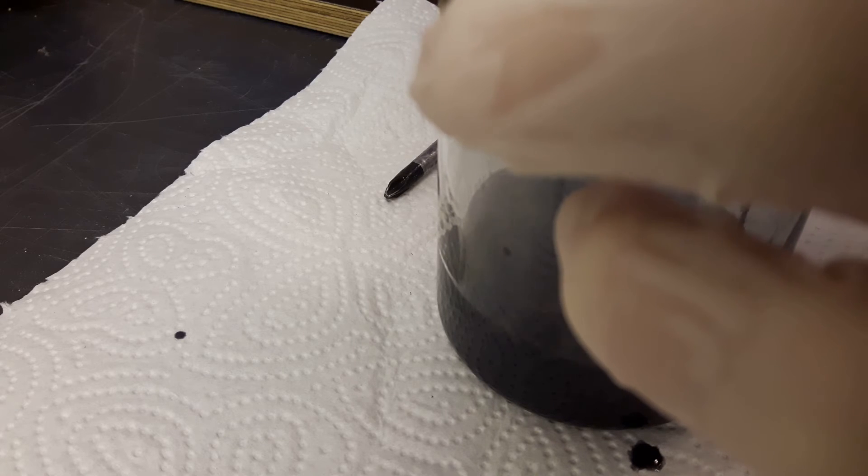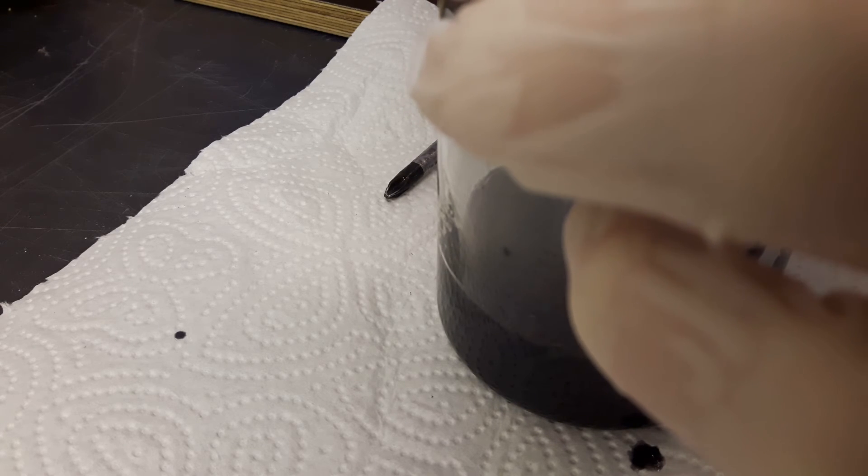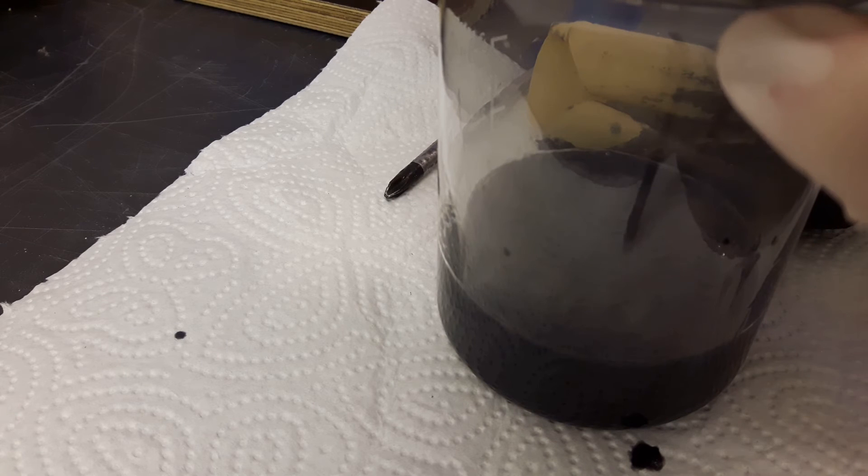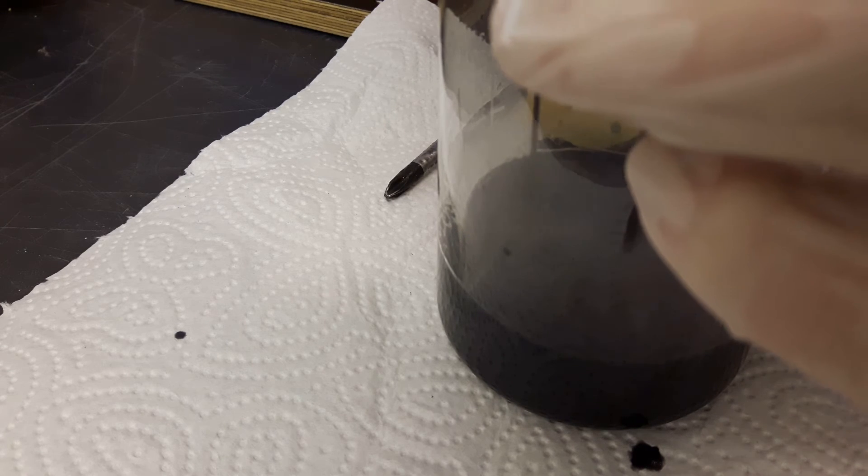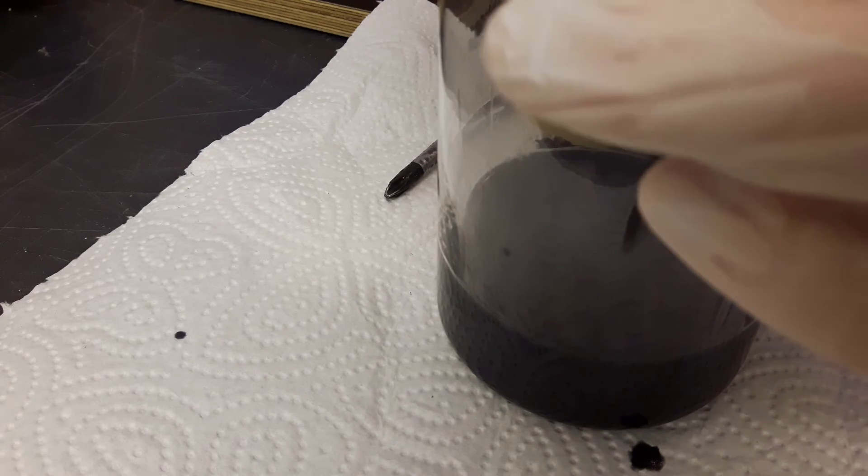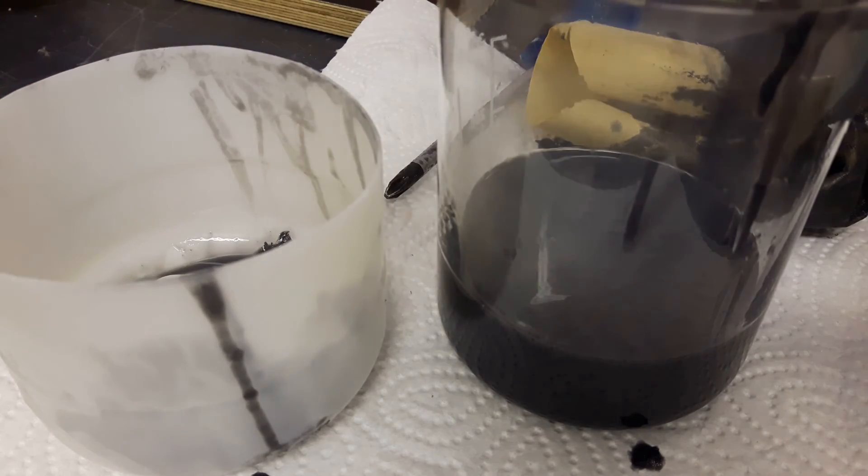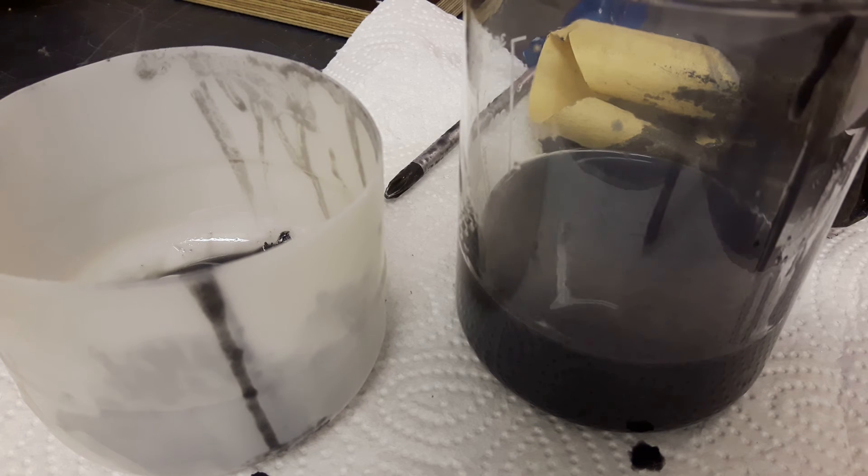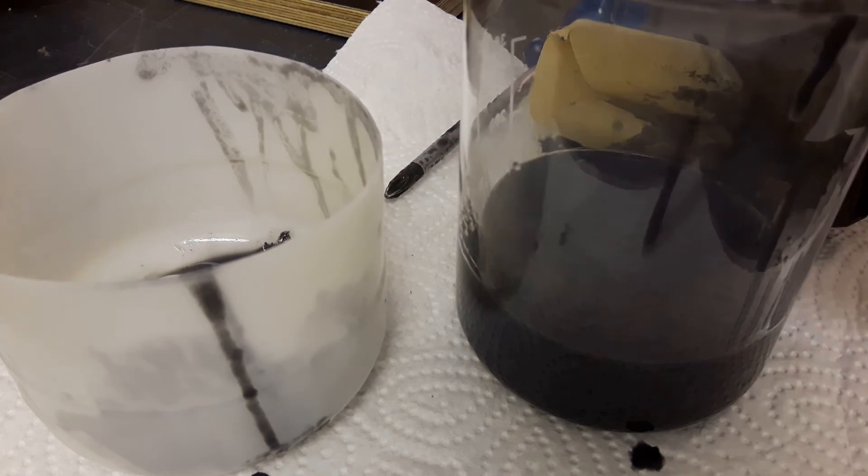So finally I just poured the content of the beaker back into the earlier Erlenmeyer flask for the distillation. So swapping the beaker or flask is absolutely unnecessary and just part of the fail here. As you see this stuff makes a lot of dirt and it's stinking horrible. So make sure that you have a good ventilation.